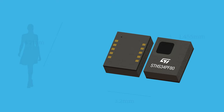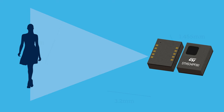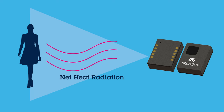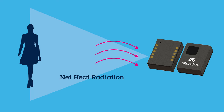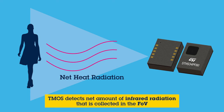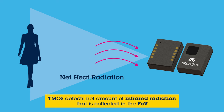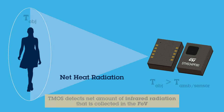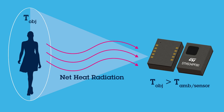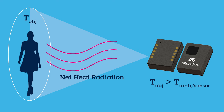Every object emits some level of thermal radiation corresponding to its temperature. The STHS34PF80 IR sensor detects net radiation emitted by a body in far infrared wavelengths according to the blackbody emission Planck's law, and leverages this effect in a non-intrusive way to enable presence and motion detection of a human.